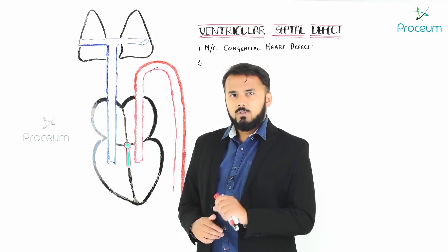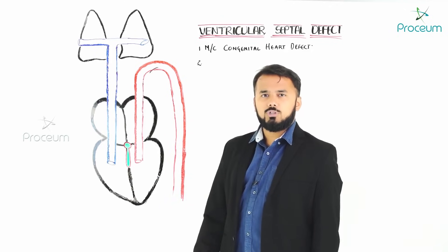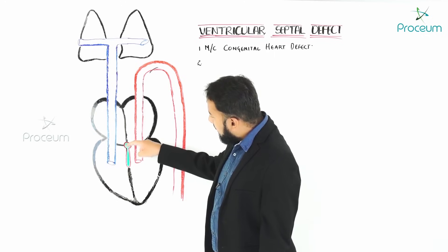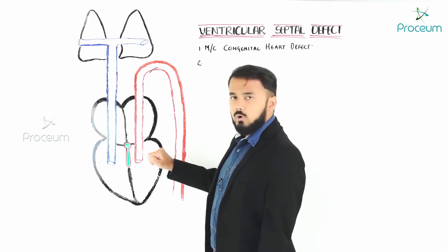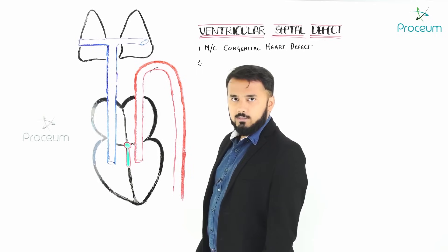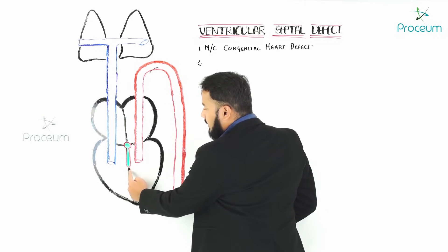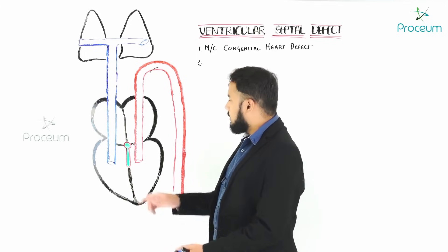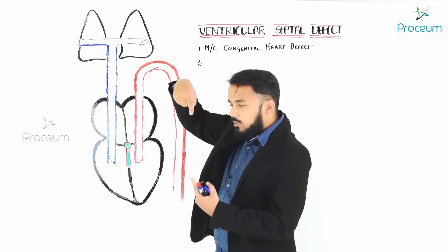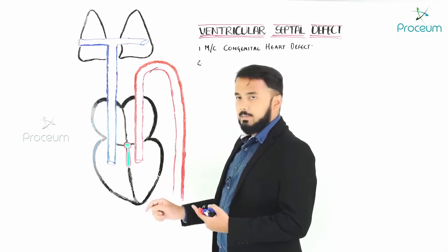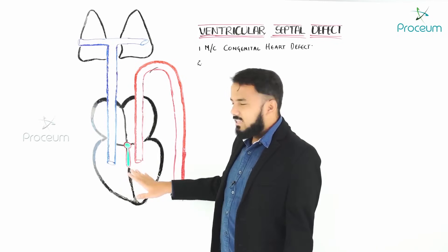The interventricular septum is formed by two things. First, from the endocardial cushion, a small septum comes downward. Second, from the bottom, a muscular septum ascends upward. Both septums join together to form a complete interventricular septum. This process takes place embryologically.